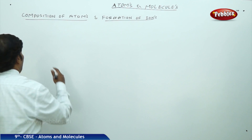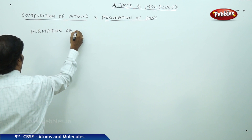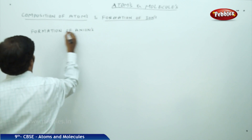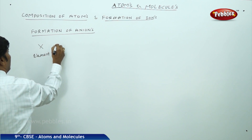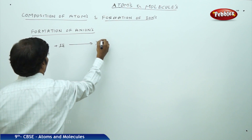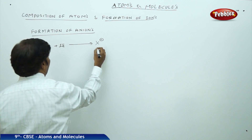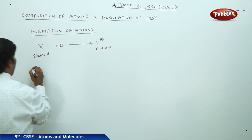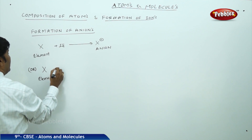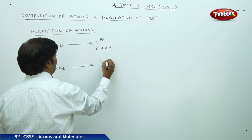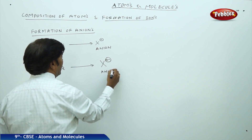The next part of the discussion is the formation of anions. If an element X gains one electron, it acquires one unit of negative charge — this is an anion. More generally, if element X gains n electrons, it forms a species with n units of negative charge — these are anionic species.